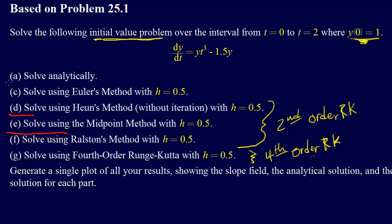All right, just to real quick check where we're at. So we've solved it analytically, we've used Euler's method, Heun's method, midpoint method. All right, so now we're on Ralston's method with H equals 0.5.